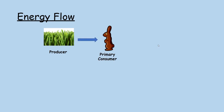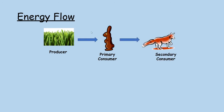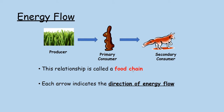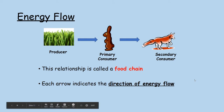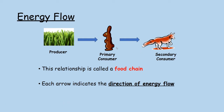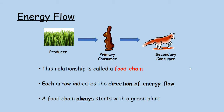The arrows in food chain diagrams show the flow of energy, not what eats what. You might think the arrow should go from rabbit to producer, but it actually goes from producer to rabbit, and from rabbit to fox, because it shows the direction energy is flowing. A food chain is a single line with no branches. These are much too simple to be fully realistic — a rabbit doesn't only eat grass and a fox doesn't only eat rabbits.